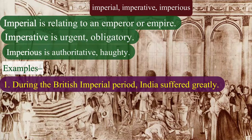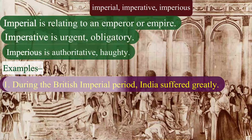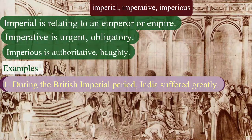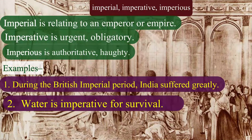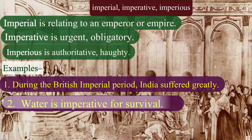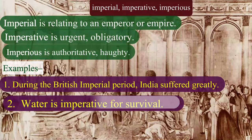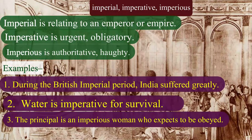Let's read the examples. Please repeat after me. During the British imperial period, India suffered greatly. Water is imperative for survival. The principal is an imperious woman who expects to be obeyed.